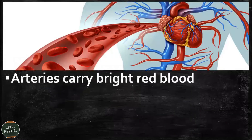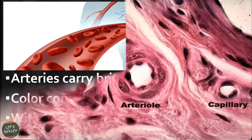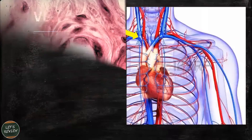Arteries carry bright red blood, and the color comes from oxygen bound to a protein called hemoglobin. This also shows the different diameters of the vein, artery, and capillary.